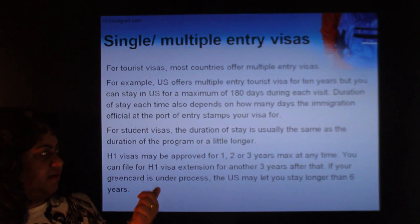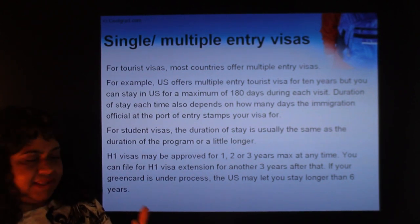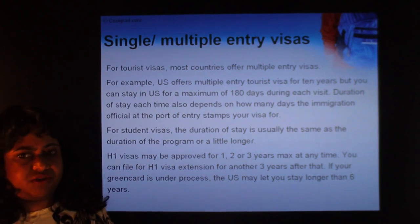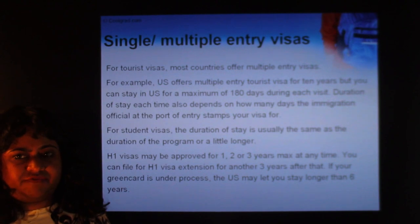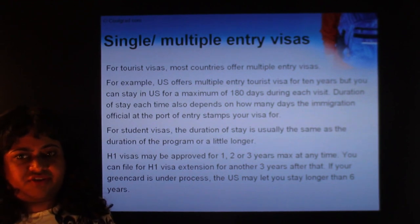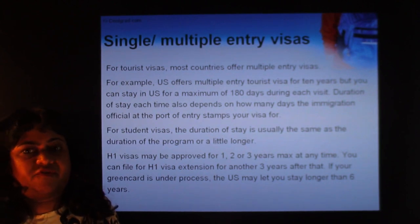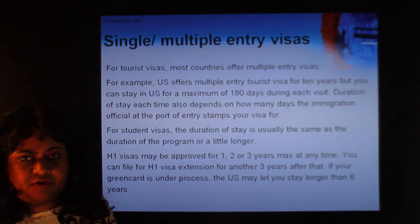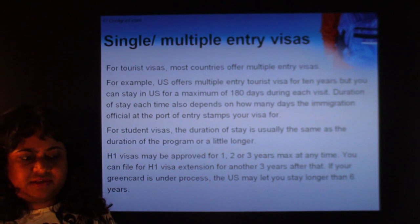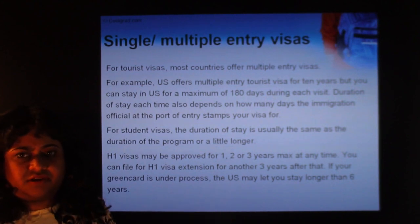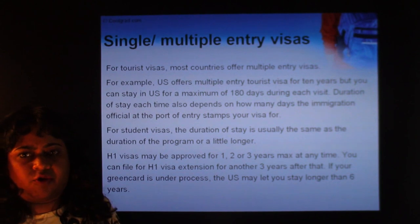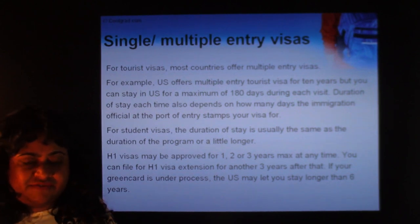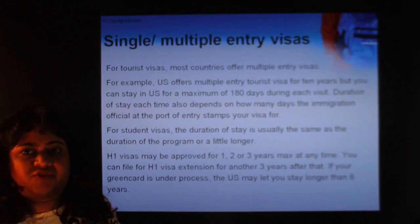If you're coming on a student visa, the duration is usually the same as the length of your program. For a 2-year master's program, you might get a visa for 2.5 to 5 years. But that doesn't mean you can stay for 5 years — on a student visa you also need a valid I-20, and once you graduate, you need an OPT card or you must leave the country. The visa stamp alone doesn't determine how long you can legally stay.